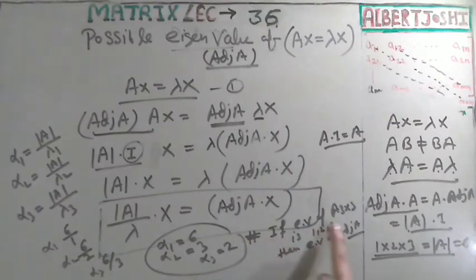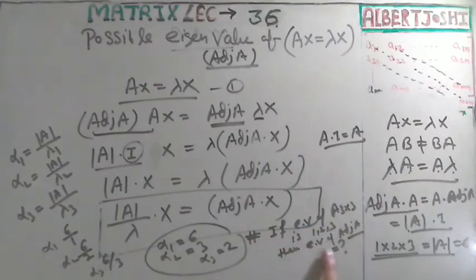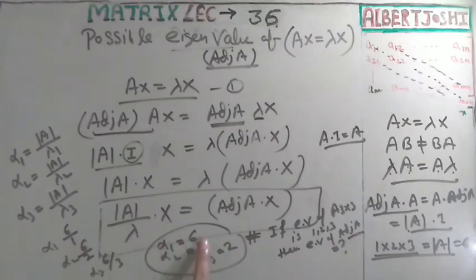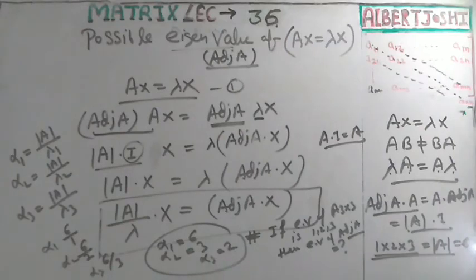This question has also come in the GATE exam: if eigenvalues of a 3×3 matrix A are 1, 2, and 3, what are the eigenvalues of adjoint of A? The answer is: α₁ = 6, α₂ = 3, and α₃ = 2. Thank you so much.